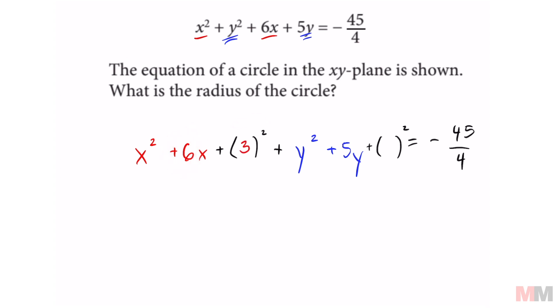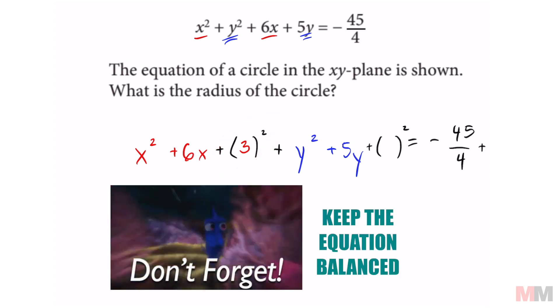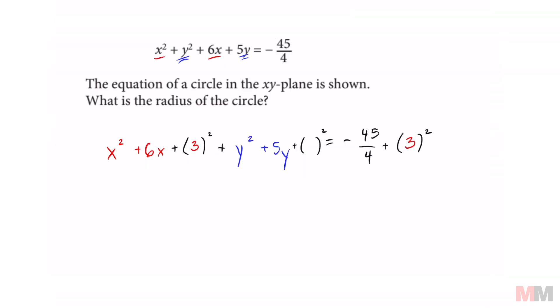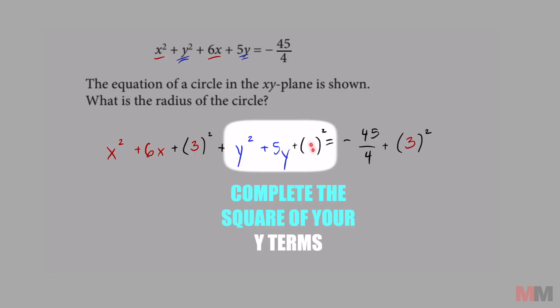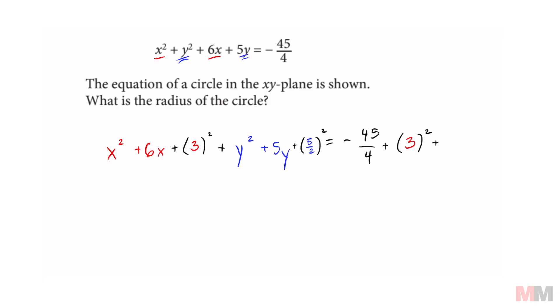Here's the thing though, you can't just magically add one term without doing the same thing on the other side. That equation has to be balanced. So whatever you add on the left, you got to add it to the right. And we might as well do this one too right here. So that's going to be half of 5, which is going to be 5 halves. Don't forget, you're going to have to add that on the right side to keep this equation balanced.